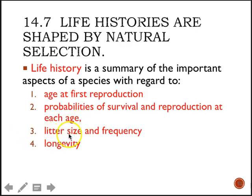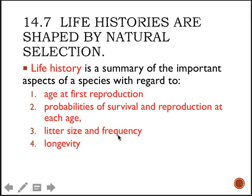The third characteristic is litter size — how many babies you're having at one time. For humans, it's generally one on average. We also talk about litter frequency: how often a population is able to reproduce. And finally, longevity: how long that population is able to live. Those are the four life history summary characteristics.